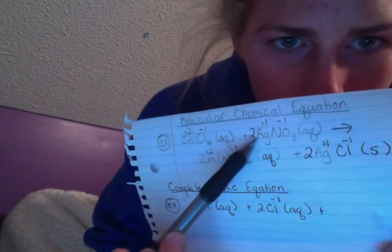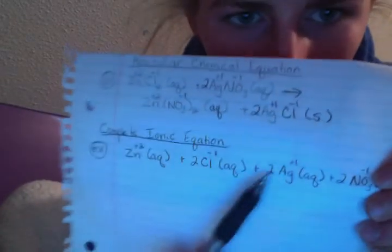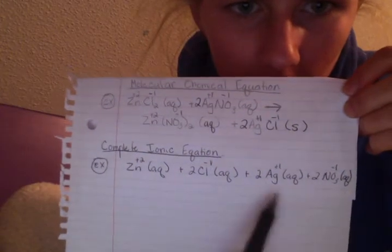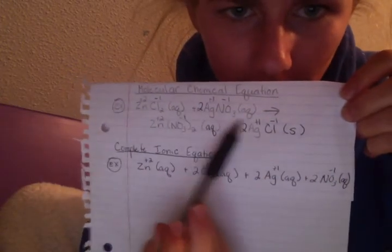Now we're going to do 2AgNO₃. For this one, the 2 distributes to the Ag and then to the NO₃ also. So it's going to be plus 2Ag plus 1 aqueous plus 2NO₃ negative 1 aqueous. That is for the second aqueous compound.